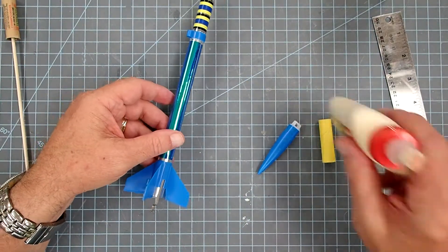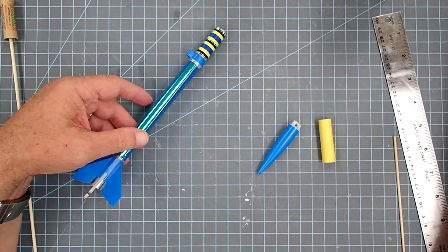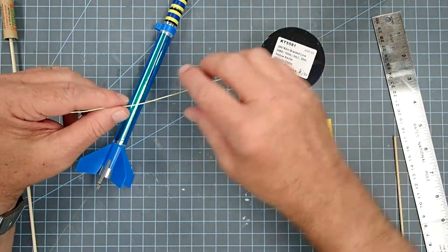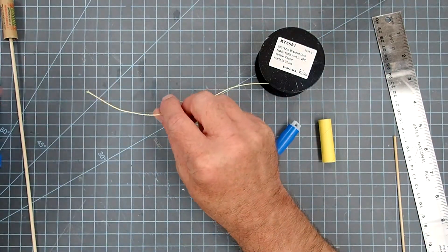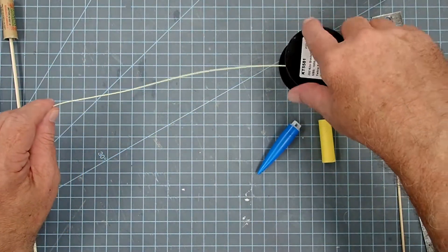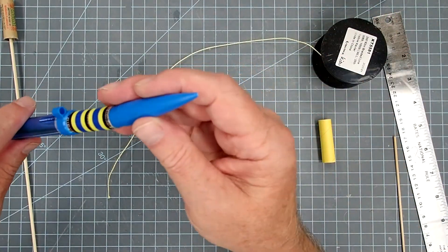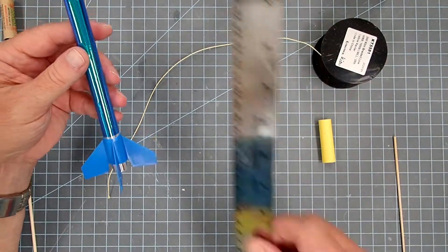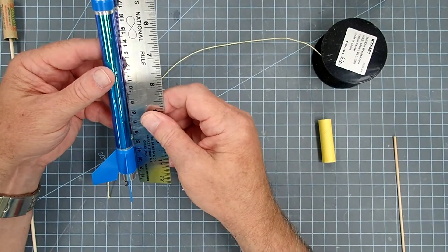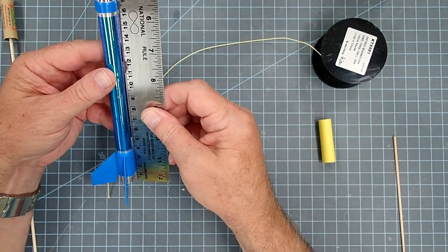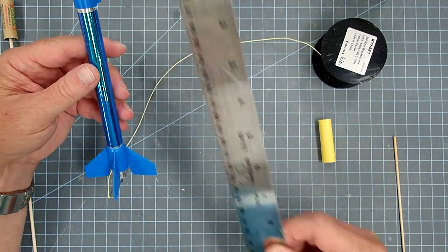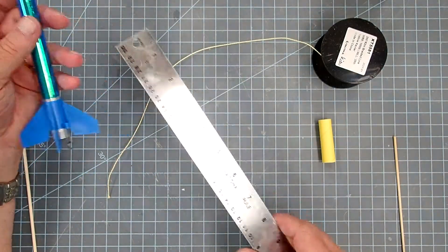So I'm going to replace mine with Kevlar. This is 100 pound test Kevlar line and the general rule of thumb is to use three times the length of your rocket. So my rocket here is about 26 and a half, about 26 centimeters there. I'm just going to round up to a foot.